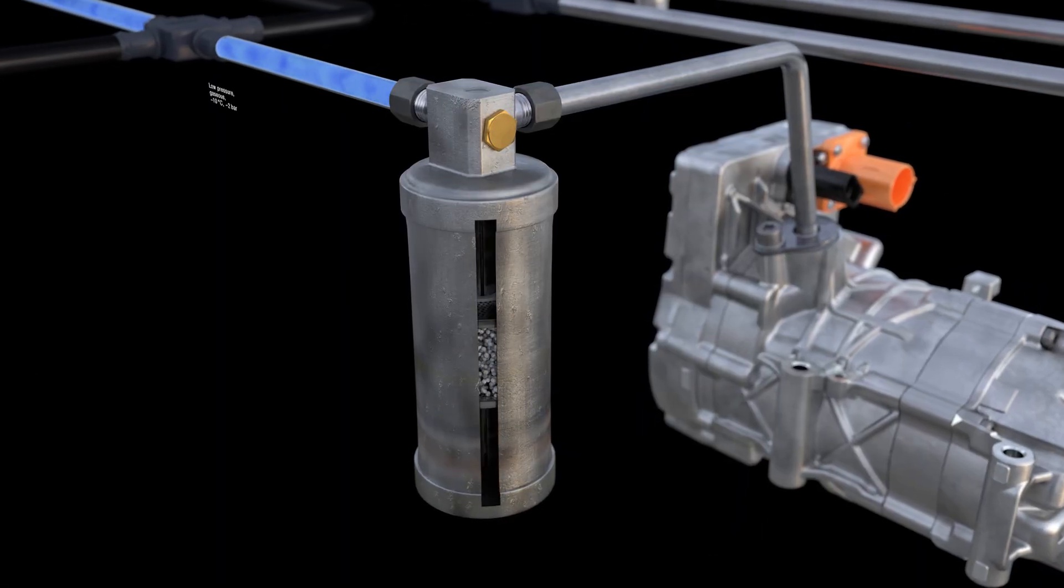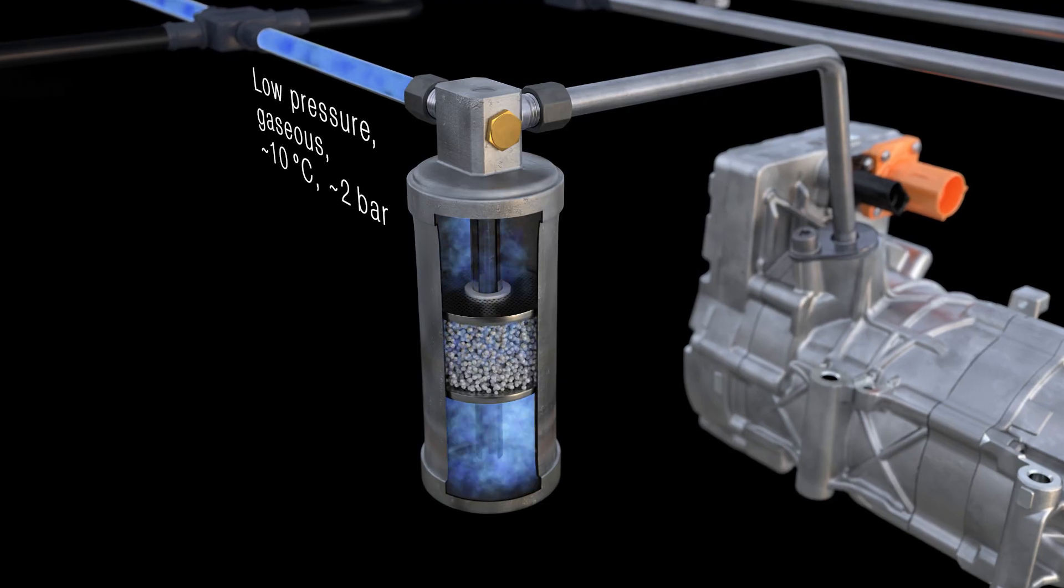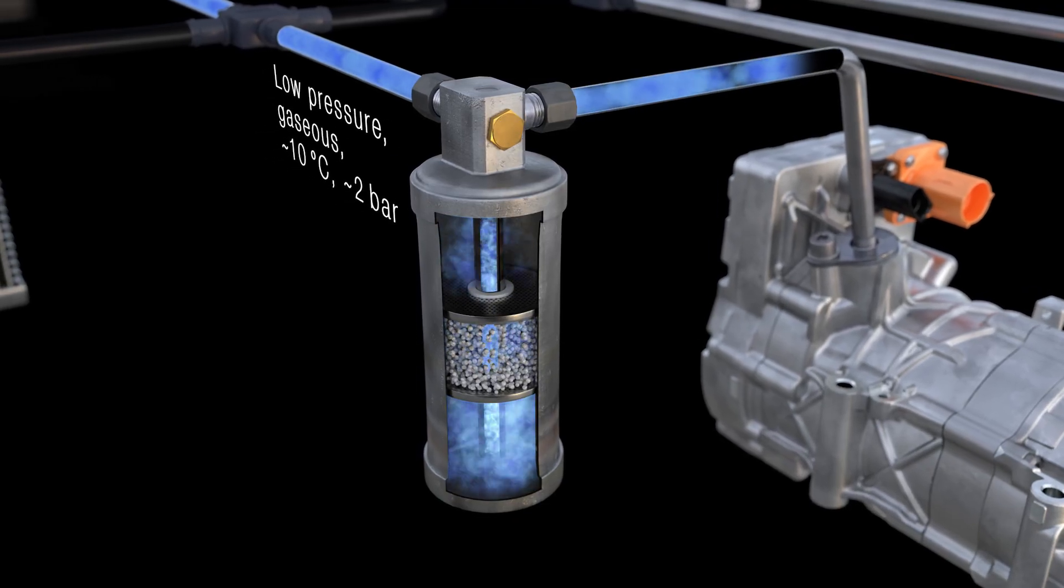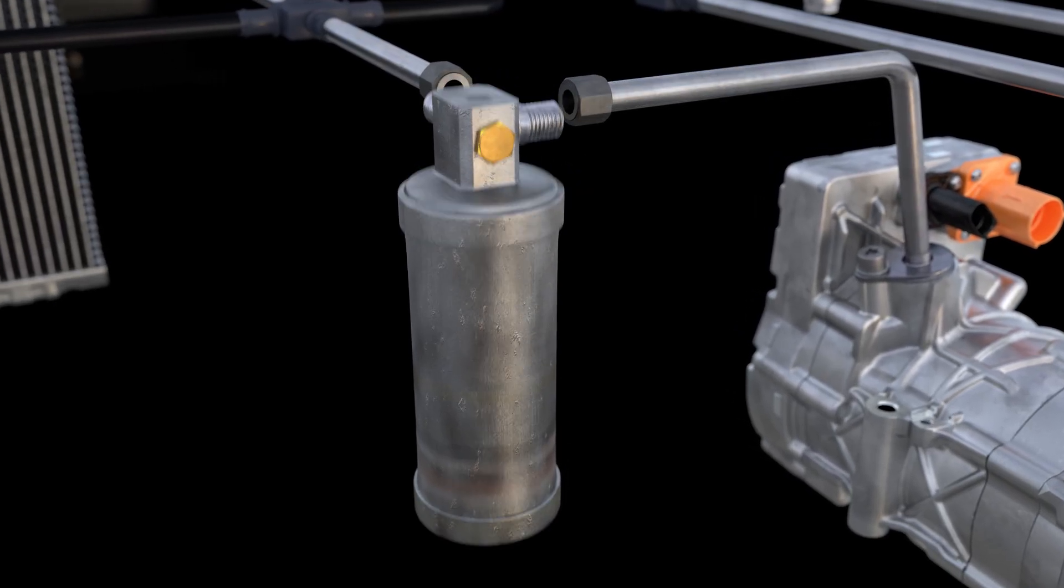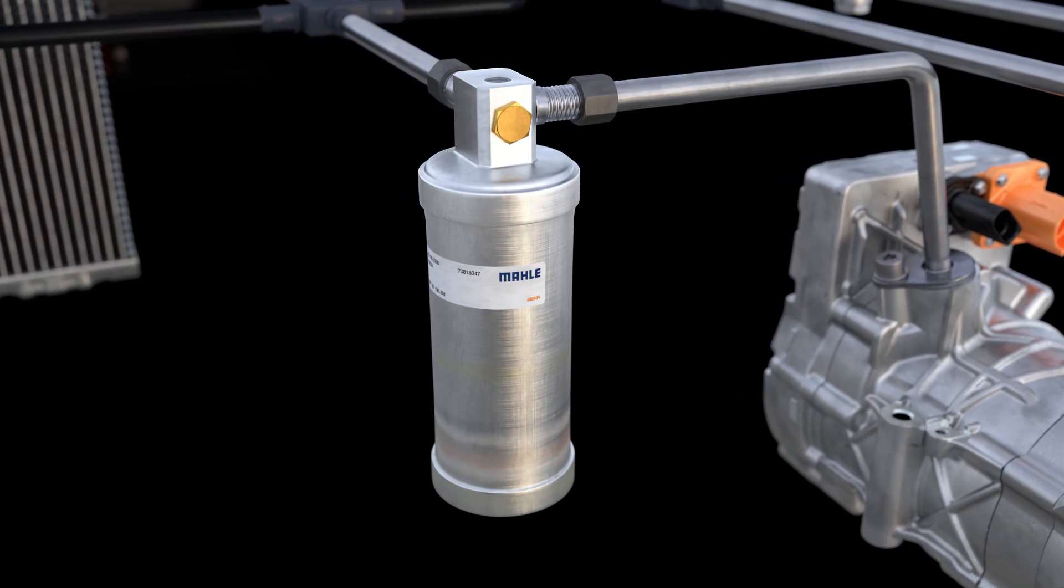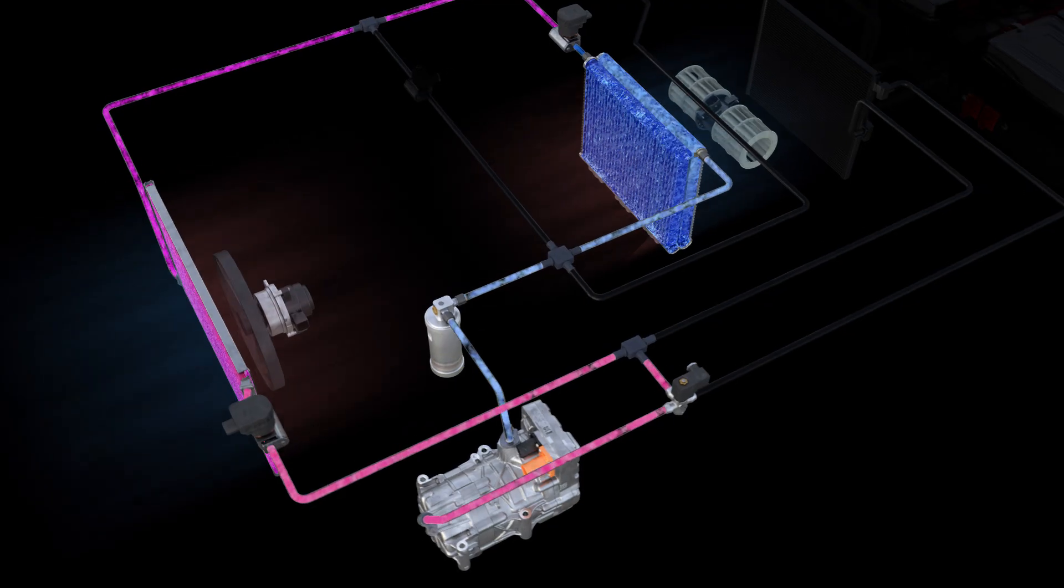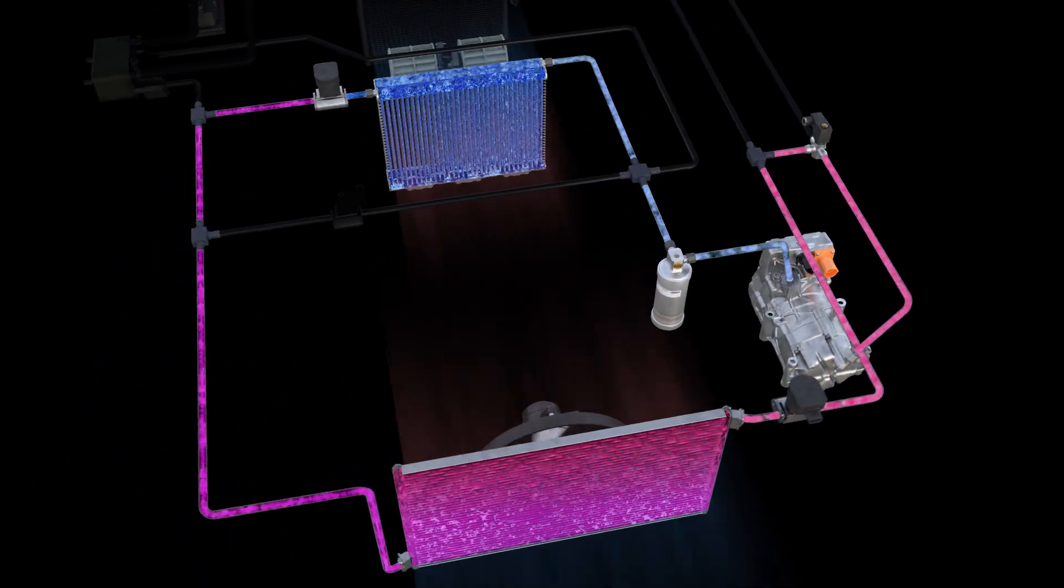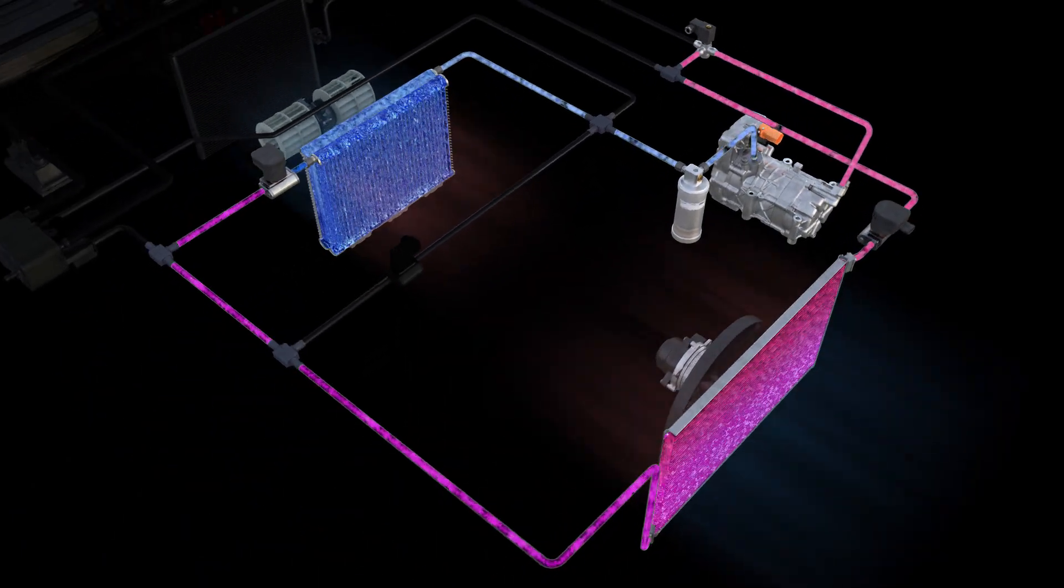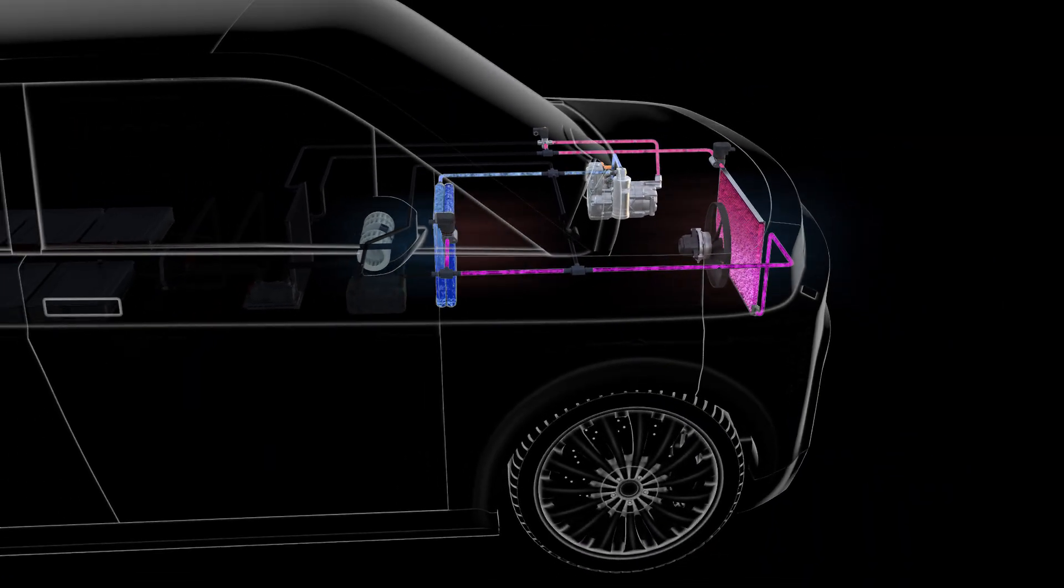The gas now has to pass through the filter dryer, which traps any moisture and foreign objects. Since the filter dryer has a limited capacity, it should be replaced every two to three years and every time the system is opened. The compressor oil also circulates through the system along with the refrigerant. This oil should not be electrically conductive, otherwise short circuits would occur in the electric motor.